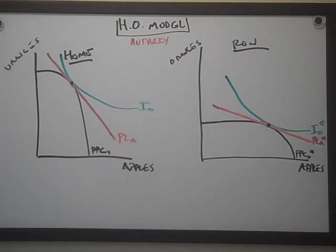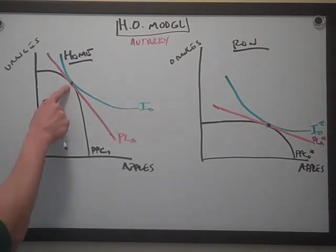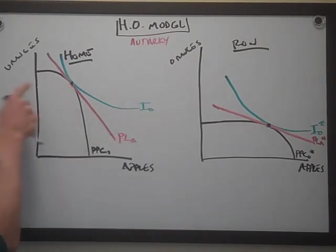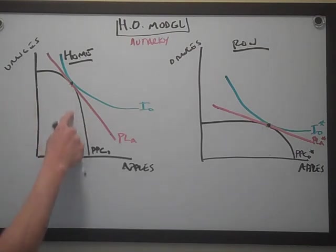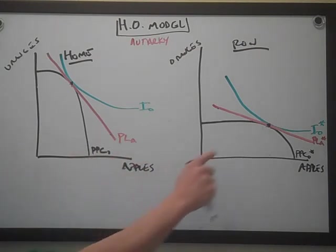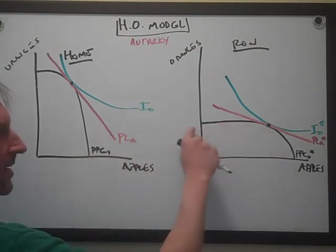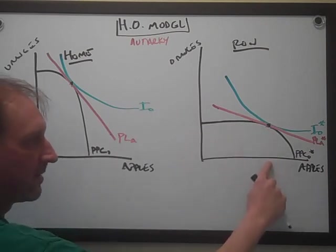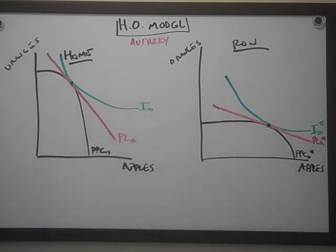This is part two for the HO model. We started in autarky, and we're going to pick right up where we left off. We get this point here — that's the optimal combination of apples and oranges for home. If home's in autarky, they're going to make and consume this many oranges and this many apples. ROW is going to make and consume this many oranges and this many apples. They eat whatever they make because they can't engage in trade.